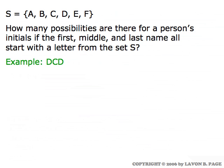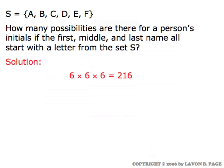How many possibilities are there for a person's initials if the first, middle, and last name all start with a letter from the set S? For example, the person's initials might be D, C, D — all those letters coming from set S. Well, the first initial could be any one of the six letters, the middle initial could be any one of the six letters, and the last name could start with any of the six letters. Six times six times six is two hundred and sixteen.